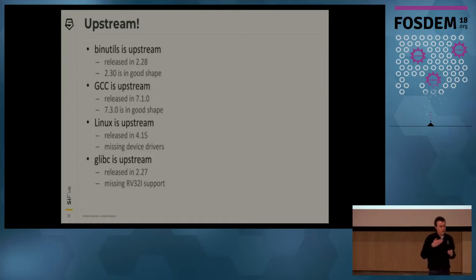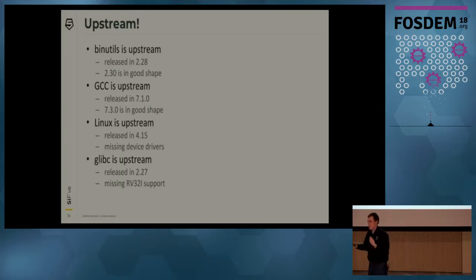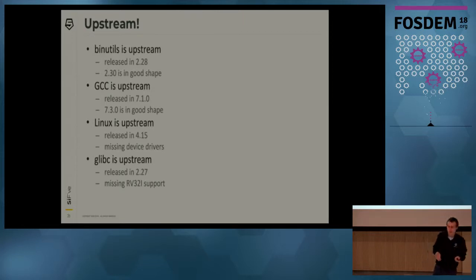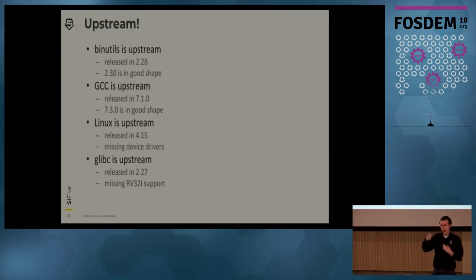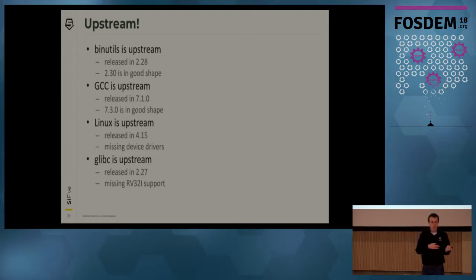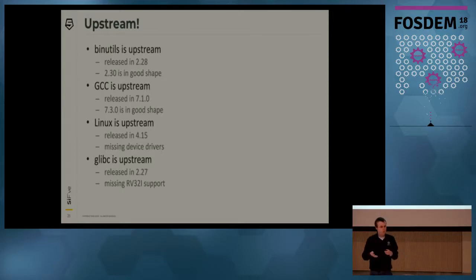Linux released about a week ago in 4.15 — the first release with RISC-V — so it's on the bleeding edge. That means none of our device drivers are upstream yet; you can't take an interrupt, get to user space, or write to the terminal. But we maintain out-of-tree patches for all of these and I'm submitting patch sets for the next Linux release. Hopefully we'll have that for 4.17, and then you'll have an upstream core system.